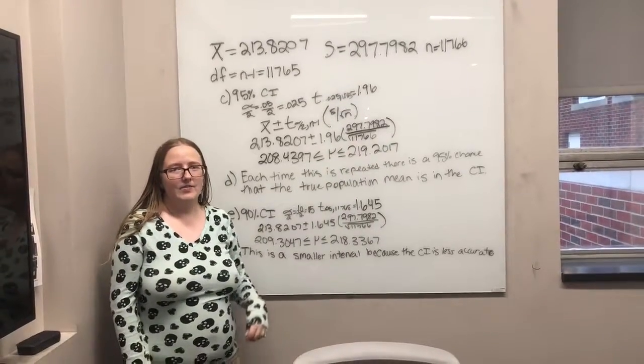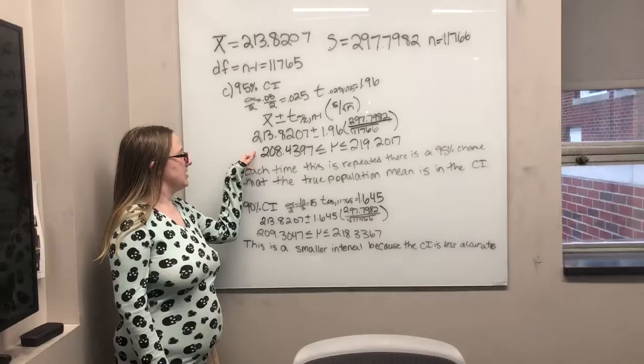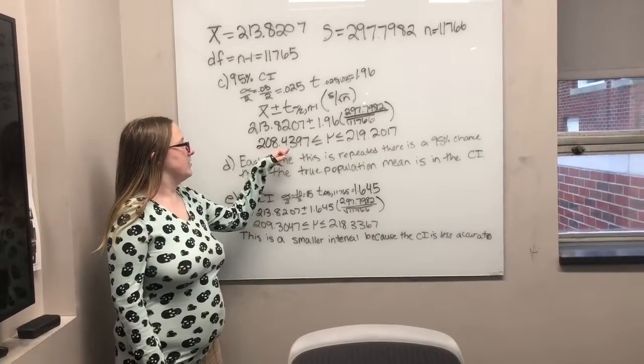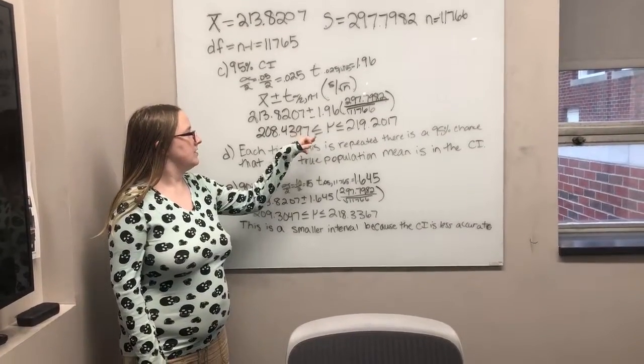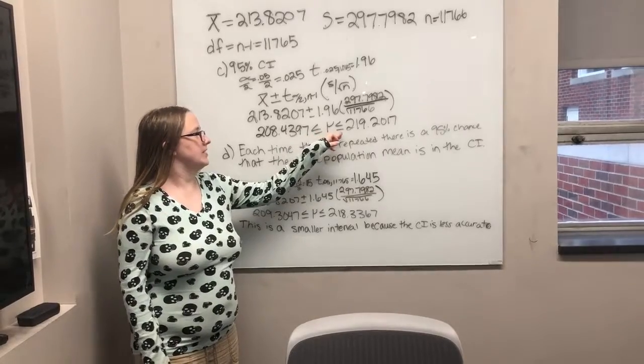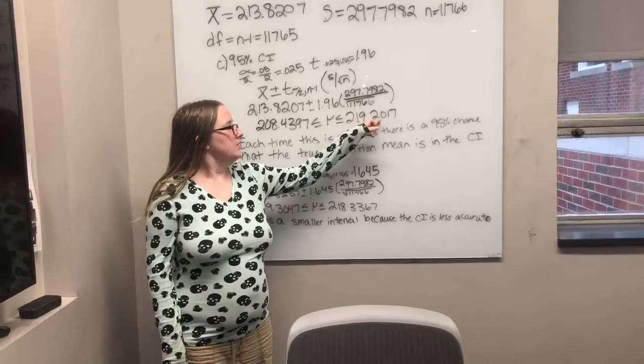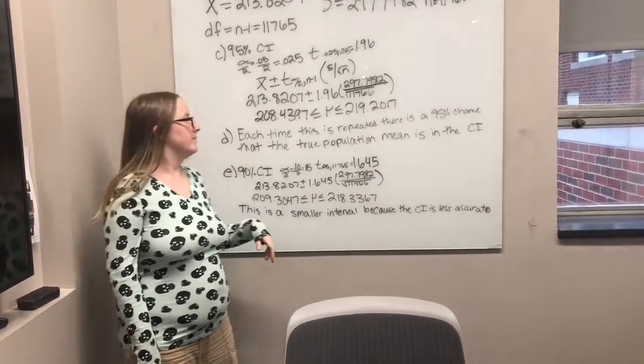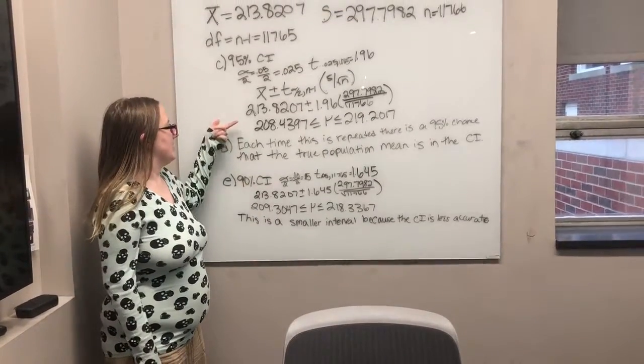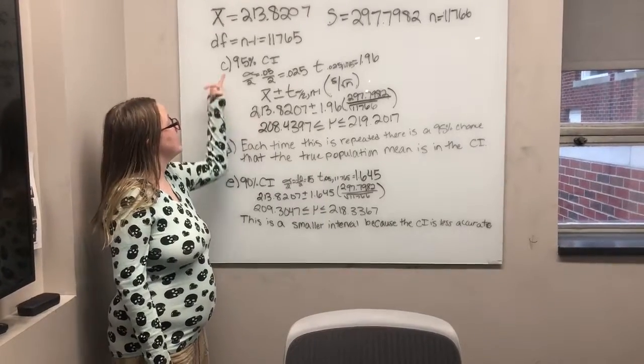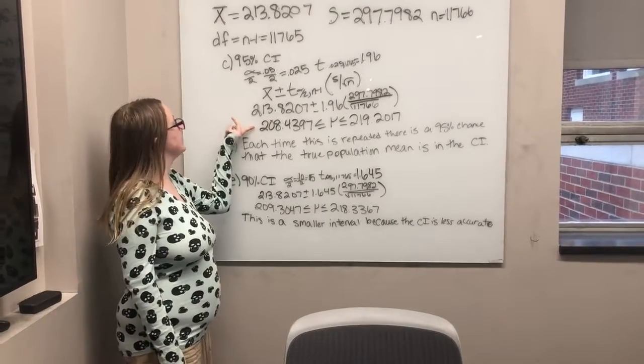And that gives this interval, which is 208.4397 less than or equal to mu less than or equal to 219.2017. And that is the confidence interval for a 95% confidence interval for C.